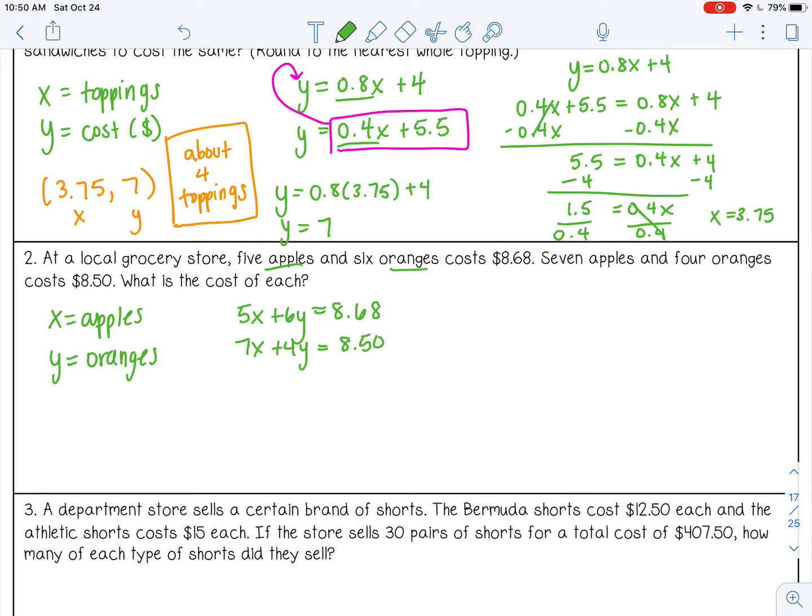And I'm actually going to multiply both of these equations. So I'm going to multiply the top one by negative seven and the bottom one by negative five. That's going to make these first two terms cancel. So let's see, that's going to give me negative 35x minus 42y equals negative 60.76. I'm just multiplying every single number by negative seven. And then on the bottom, let's see, we don't need to multiply by negative five. Actually, we need to multiply by positive five, so that's going to cancel.